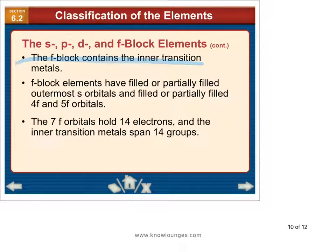F inner transition metals. F elements usually have filled, but sometimes partially filled S orbitals, and then mostly partially filled F orbitals. F sub-level holds 14 electrons, so 14 groups.